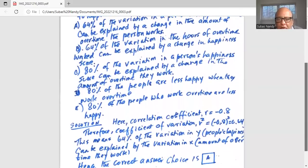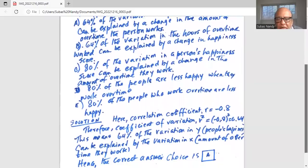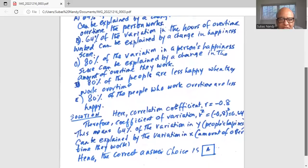Here correlation coefficient R is minus 0.8. So therefore the coefficient of variation which is R square is minus 0.8 square or minus 0.8 times minus 0.8. Two negative signs make it positive. So R square is 0.64.